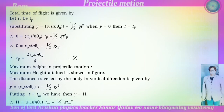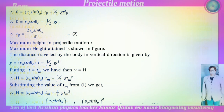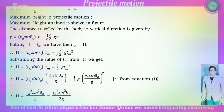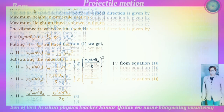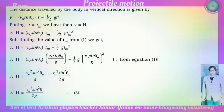For maximum height H: the distance traveled in the vertical direction is y equals v-zero sin theta-zero times t minus one-half g t-squared. Setting t equal to t_m, we get H equals v-zero sin theta-zero times t_m minus one-half g t_m squared. Substituting t_m equals v-zero sin theta-zero / g, we get H equals v-zero-squared sin-squared theta-zero divided by g minus v-zero-squared sin-squared theta-zero divided by 2g, which gives H equals v-zero-squared sin-squared theta-zero divided by 2g.